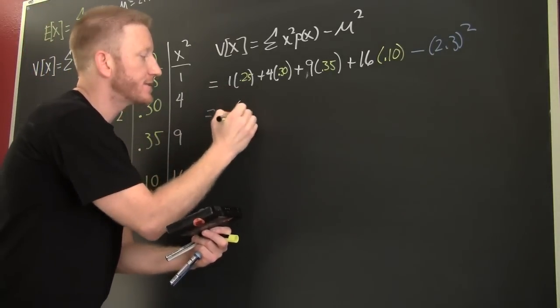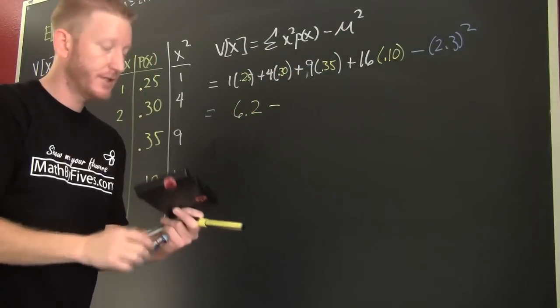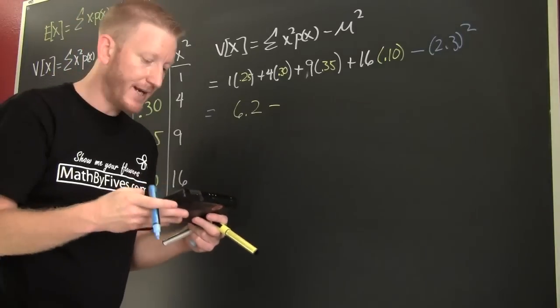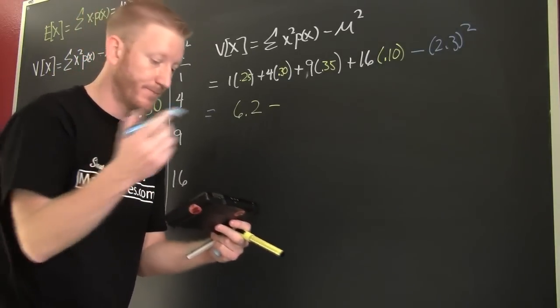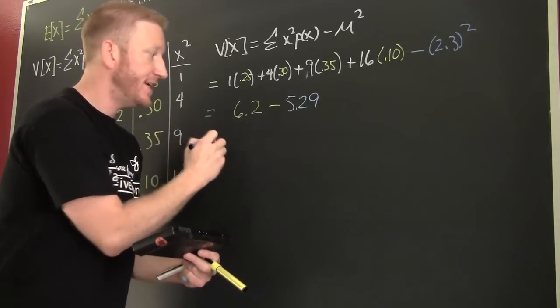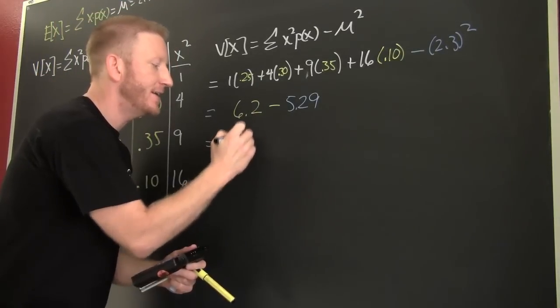You're my boy, blue. Ready? 2.3 squared. I know. Lame. Should be doing it in my head, right? 5.29. Uh-huh. And the difference is? Oh, boy. Lazy. 0.91.